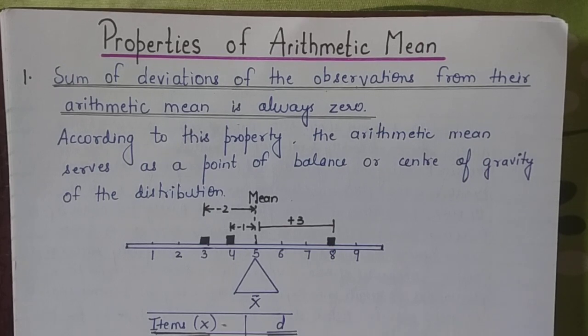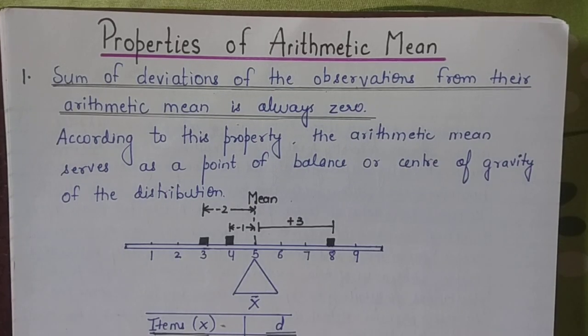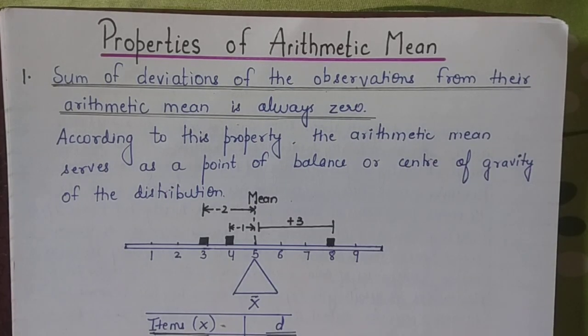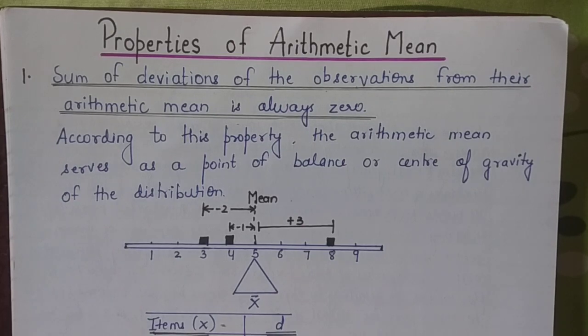So the very first property of arithmetic mean is that the sum of deviations of the observations from their arithmetic mean is always zero. If I am talking about the deviations either on the left hand side or on the right hand side, if I am talking about a number line or if I am talking about the simple numbers in some data mean.